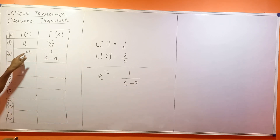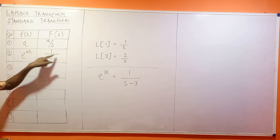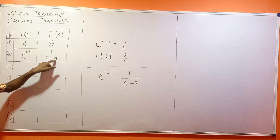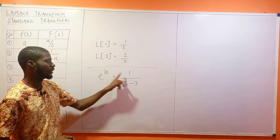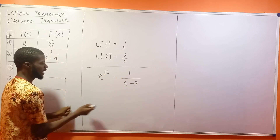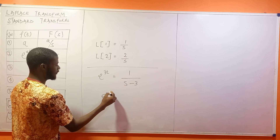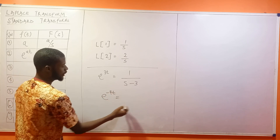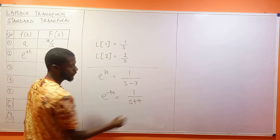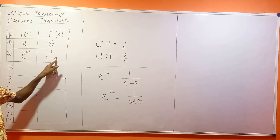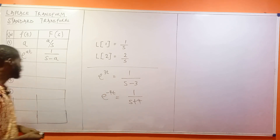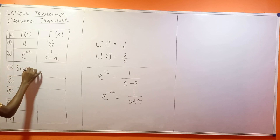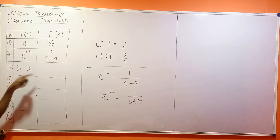Look at it: if you have e^(AT), A is a constant. The formula gives you 1 over S minus A, and A is a number. Here A is 3, so we have 1 over S minus 3. What if you have e^(-4T)? This will become 1 over S plus 4, because A is minus 4, and minus minus 4 gives you a plus.